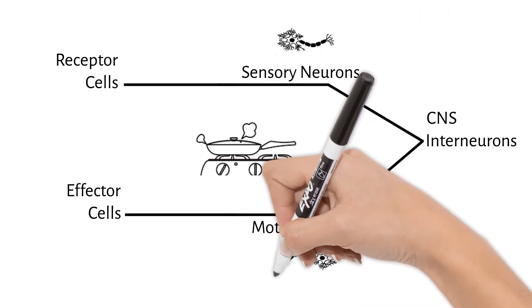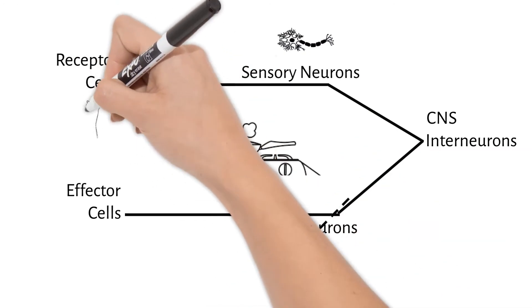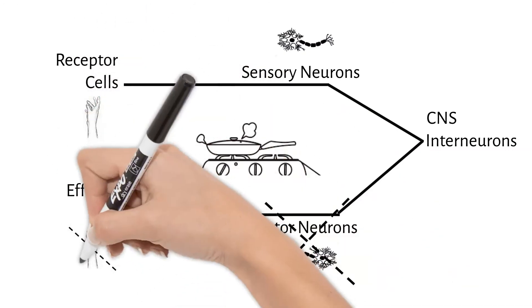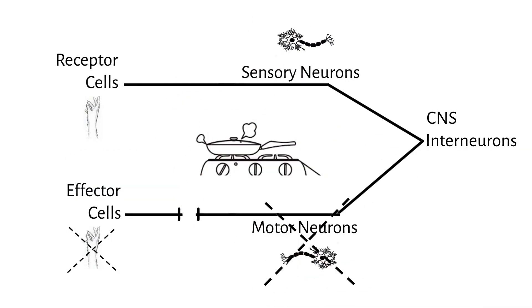If you had a problem with your motor neurons, you would feel your hand on the stove, but you couldn't move it. The message for your muscles to move your hand doesn't get to them, even though you feel it and know it is a problem.